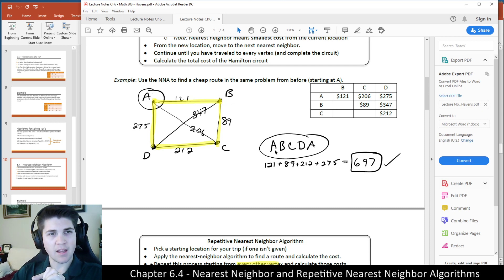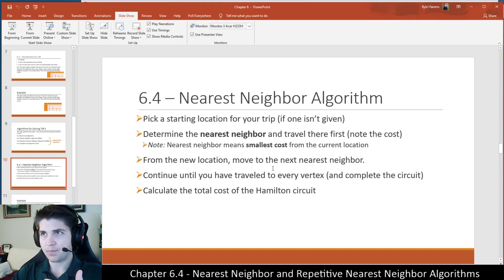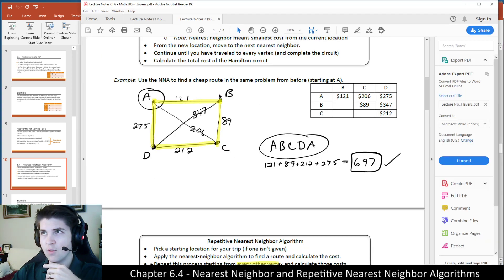And then from B, we go to the next nearest neighbor, which was the next step of the algorithm. And so from B, we then travel to C because that's the cheapest location. Then once we move to C, again, we're kind of pretending that we're in this location traveling to the next nearest neighbor.